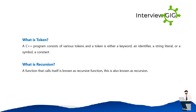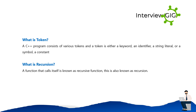What is a token? A C++ program consists of various tokens, and a token is either a keyword, an identifier, a string literal, a symbol, or a constant. What is recursion? A function that calls itself is known as a recursive function; this is also known as recursion.